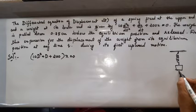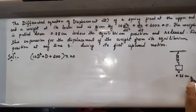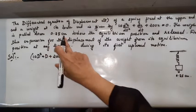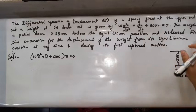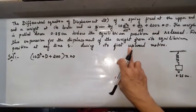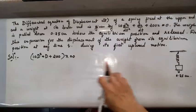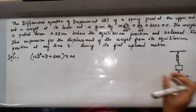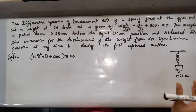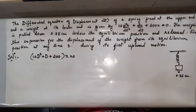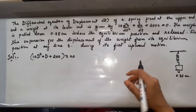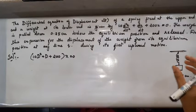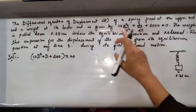The load is pulled 0.25 centimeters below the equilibrium position and then released. Find the expression for the displacement of the weight from its equilibrium position at any time t during its first upward motion. When you pull the spring and release it, it will vibrate — it will be harmonic motion — and you can apply differential equations for that.